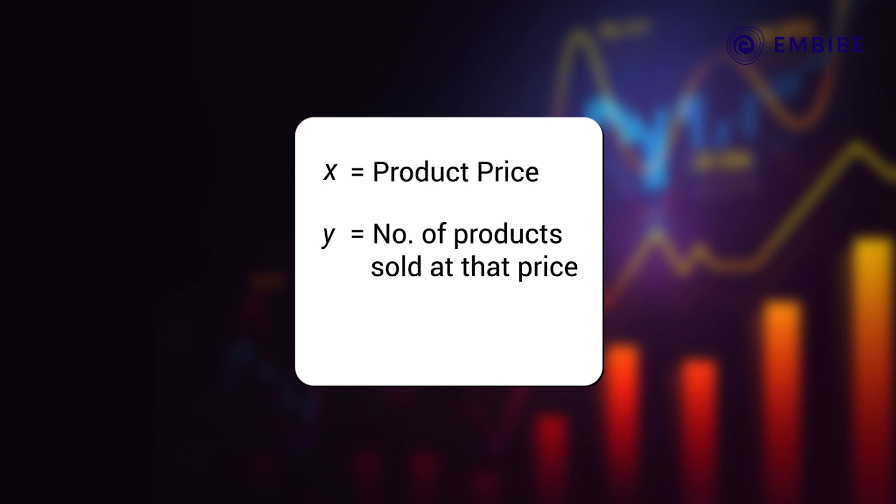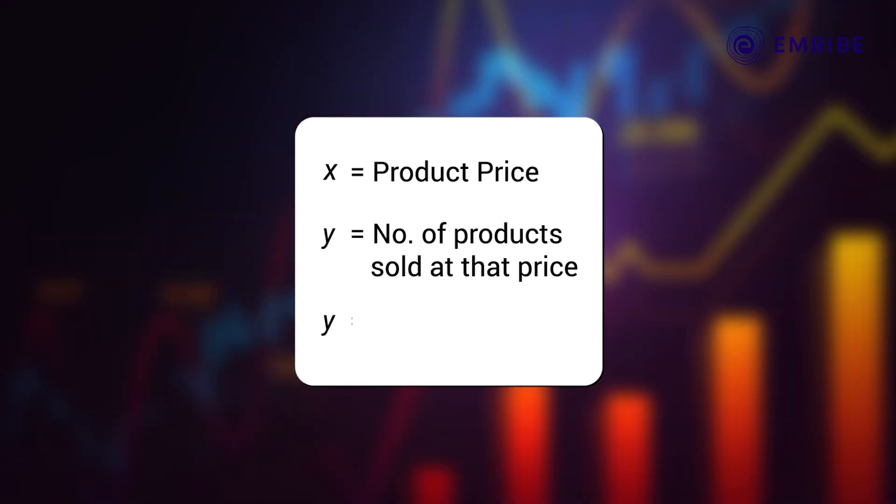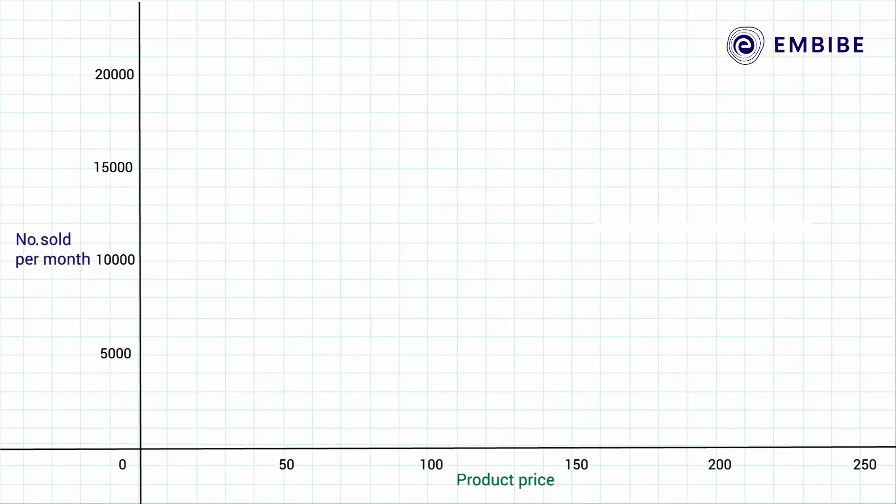Let's assume that this relationship is close enough to linear that you can describe it by the equation for a line: y equals mx plus b. For example, suppose when a product costs 20 rupees you sold 16,000 per month, but when it costs 140 rupees you only sold 4,000 per month.